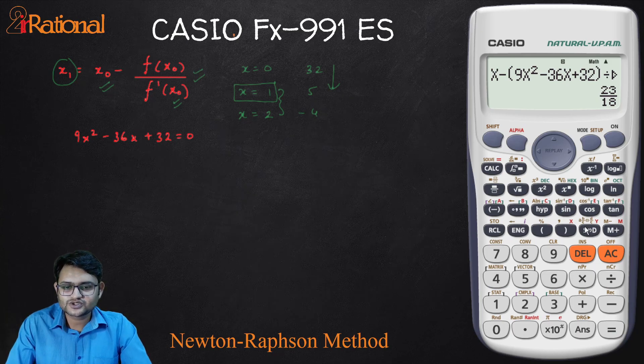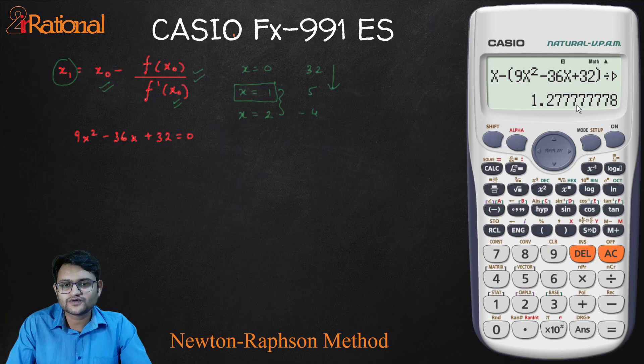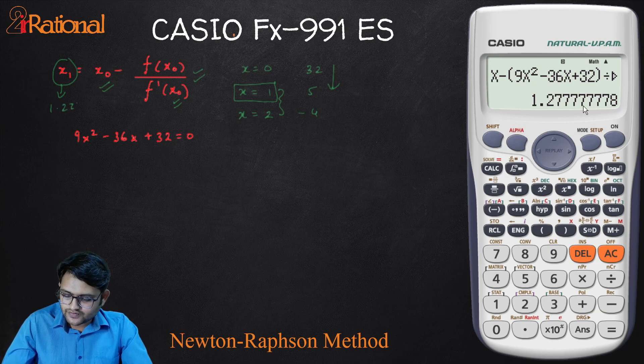If you want it in decimals, you can press SD and it shows you in decimal places. So you can see it is between 1 and 2. It is 1.277. This is my next iterative value. That is my x1 is now 1.2778.